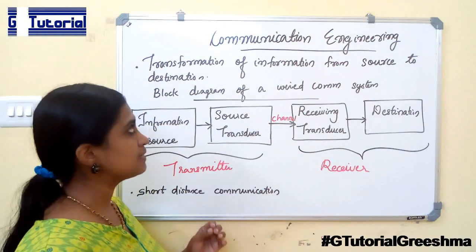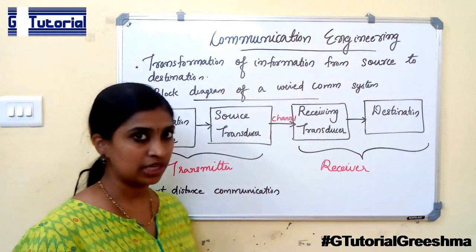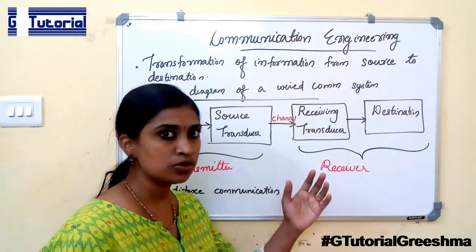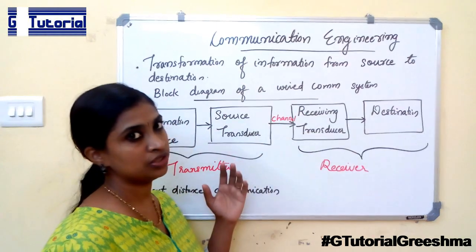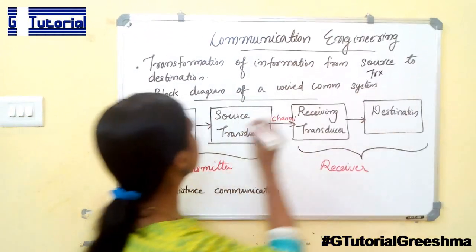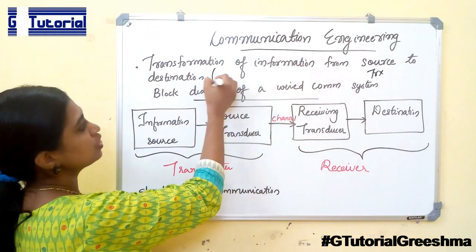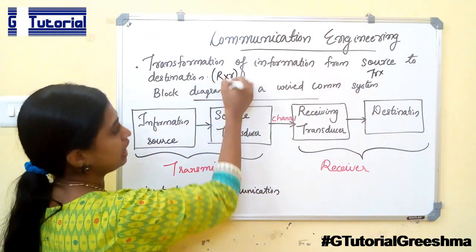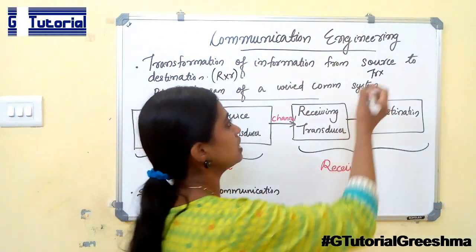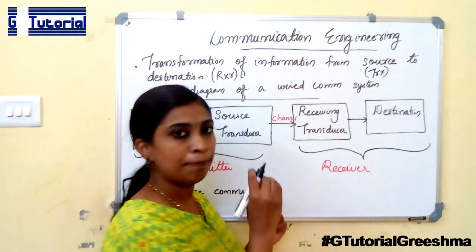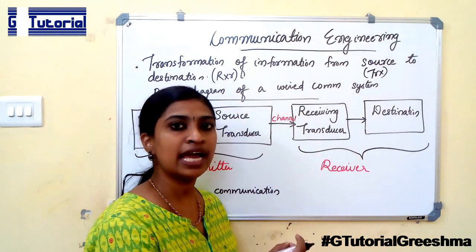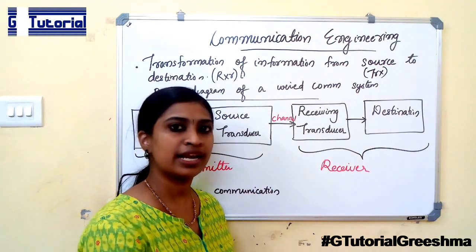First, let us see what is meant by communication. Communication is a transformation of information from a source to a destination. The source is called the transmitter and the destination is called the receiver, and the information is transmitted from source to destination through a path which is known as a channel. The channel can be either a wired channel or a wireless channel.